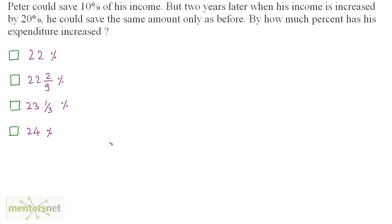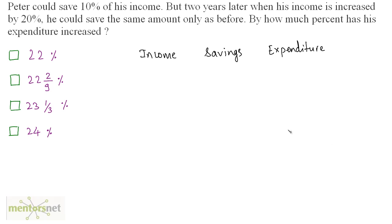Peter could save 10% of his income, but 2 years later when his income increased by 20%, he could save only the same amount as before. By how much percent has his expenditure increased? Let us set up a table with income, savings, and expenditure. Let the income of Peter be 100. He saves 10% of his income, so savings are 10, and therefore expenditure is 90.